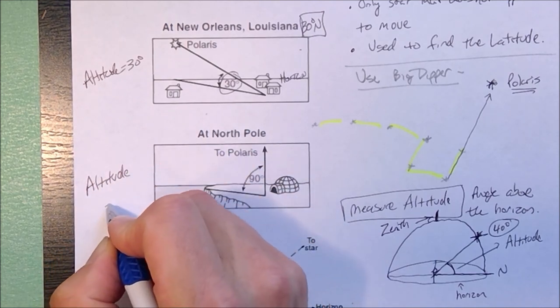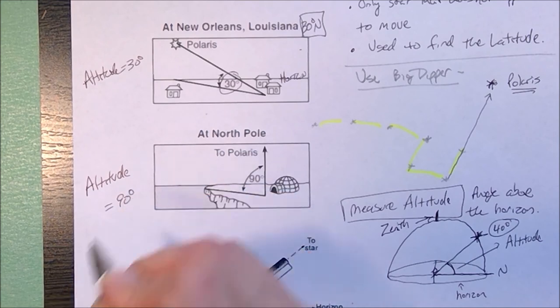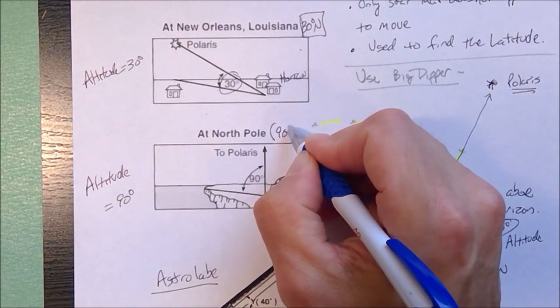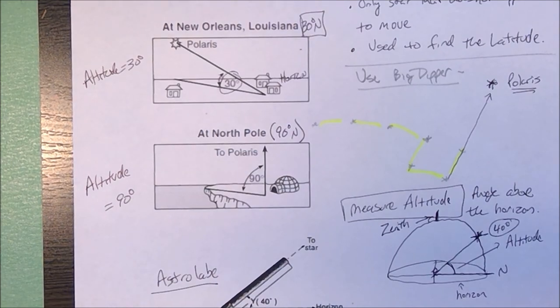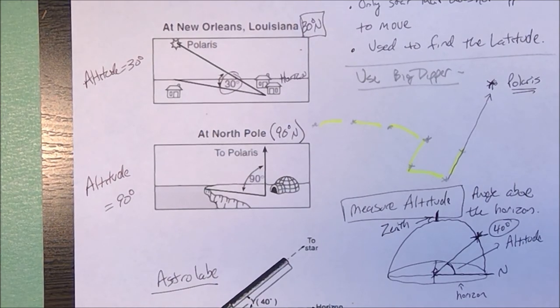So the altitude of the North Star would be 90 degrees, and at the North Pole, you're at 90 degrees north. So you've seen all these models. Finding Polaris is important, and Polaris does allow us to determine our latitude. Thank you very much.